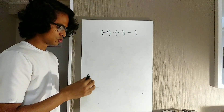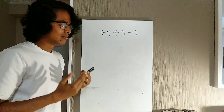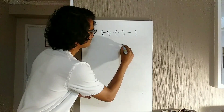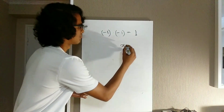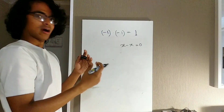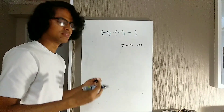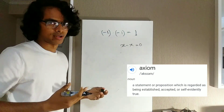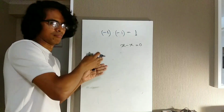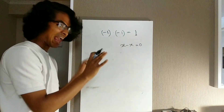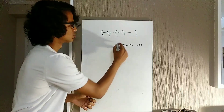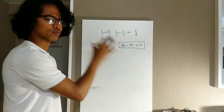The only thing you will need to know to understand the proof is this: imagine you have a number x. If we subtract x from itself, we'll have 0. This is a basic axiom. In mathematics, there are things called axioms — an axiom is something self-explanatory that doesn't need any proof. It's true by the very definition of the minus operator.